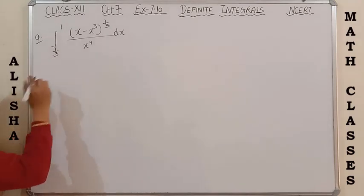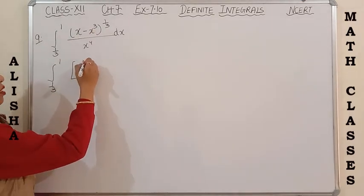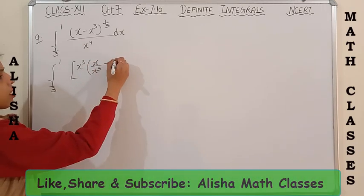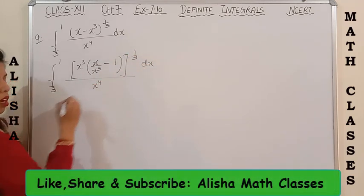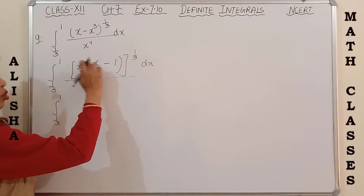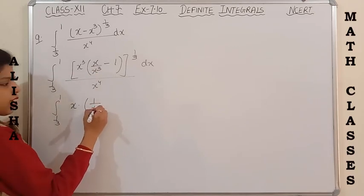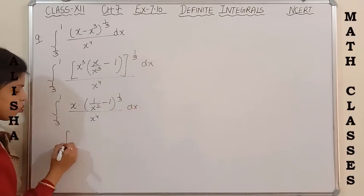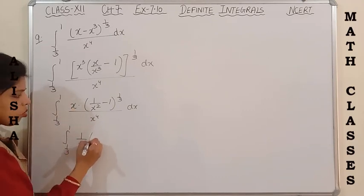Next is question number 9. First we take x³ common, so it becomes x × (1/x³ - 1)^(1/3) dx upon x^4. Now x³ raised to 1/3 means the cube and 1/3 cancel, and x cancels with x³, giving 1/(x² - 1)^(1/3) upon x^4 dx. This x cancels with x^4, so it becomes 1/(x³ × (1/x² - 1)^(1/3)) dx.